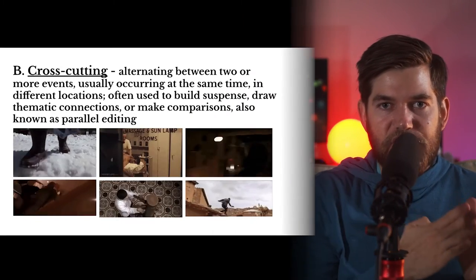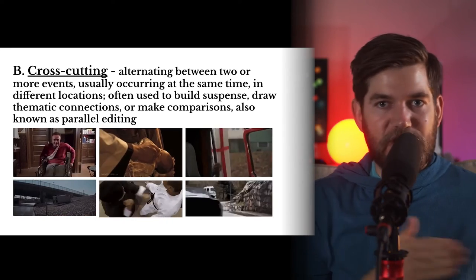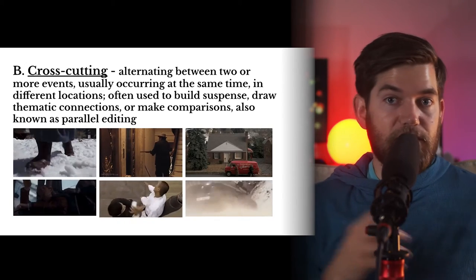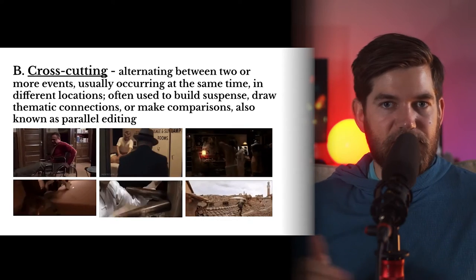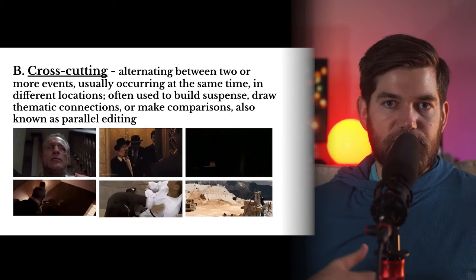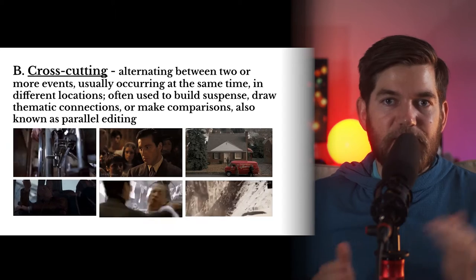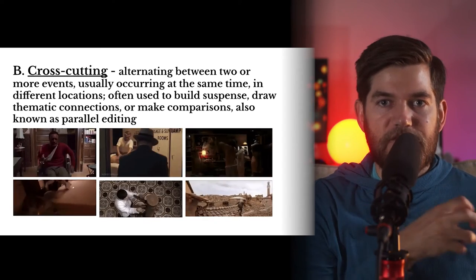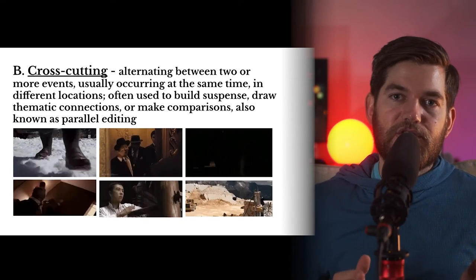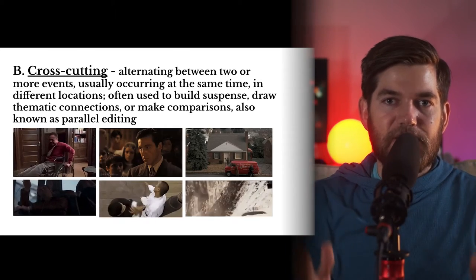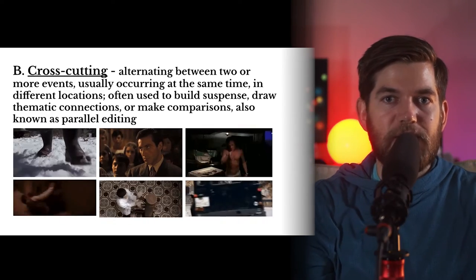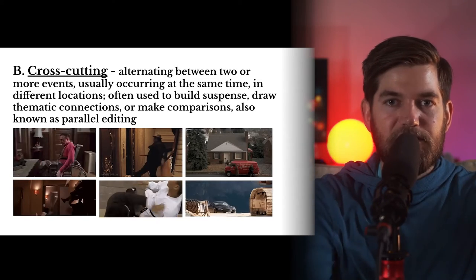Cross-cutting is when the editor alternates between two different events, going back and forth. These two events are usually occurring at the same time in different locations. This technique can be used to build tension and suspense, to make thematic connections through juxtaposition, or to draw comparisons between events. Cross-cutting is also known as parallel editing — you can think of it as jumping between two parallel streams of time, going from one to the other and back.